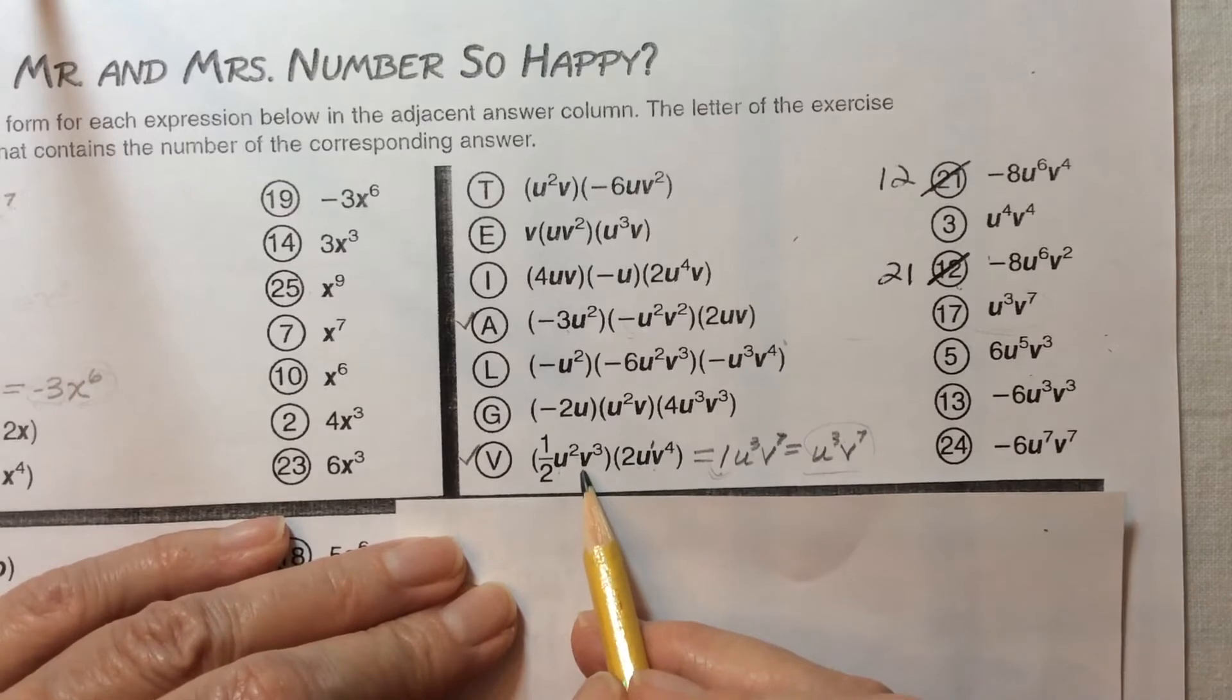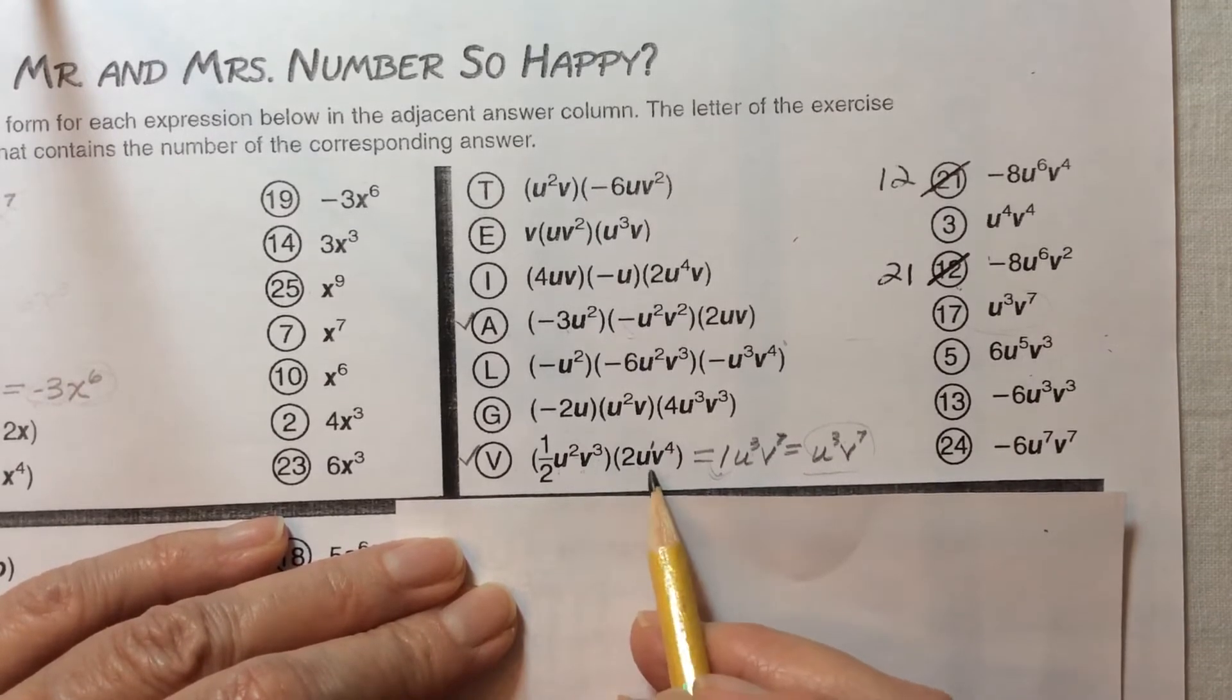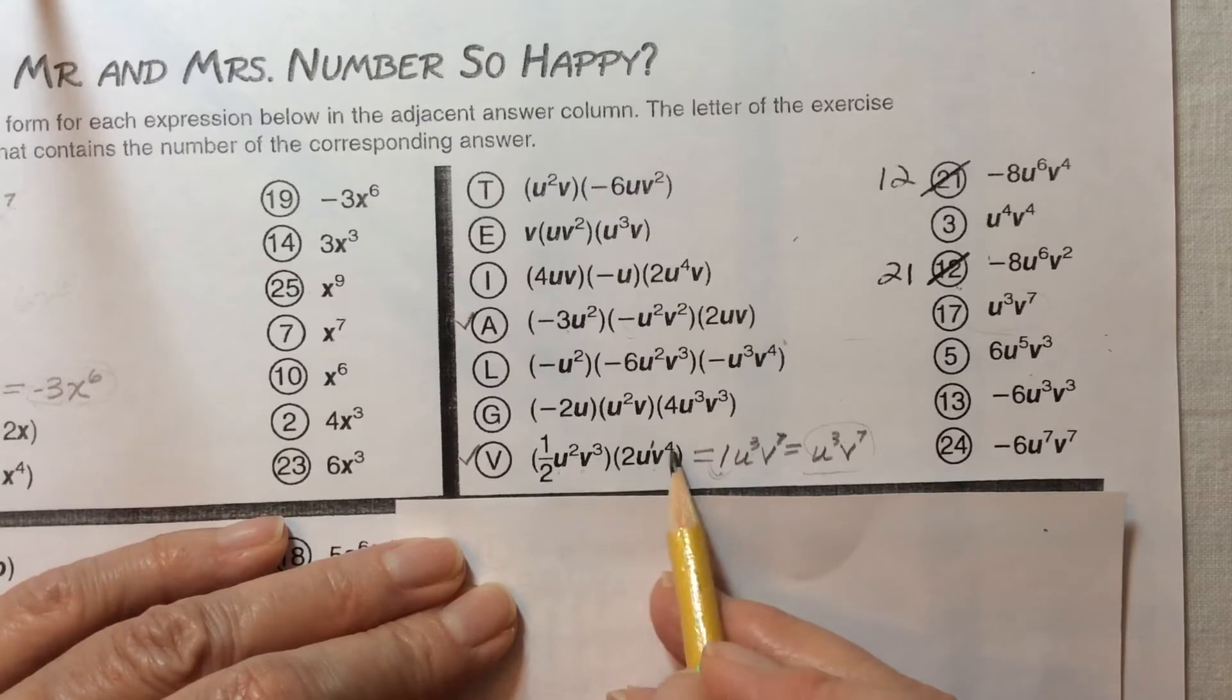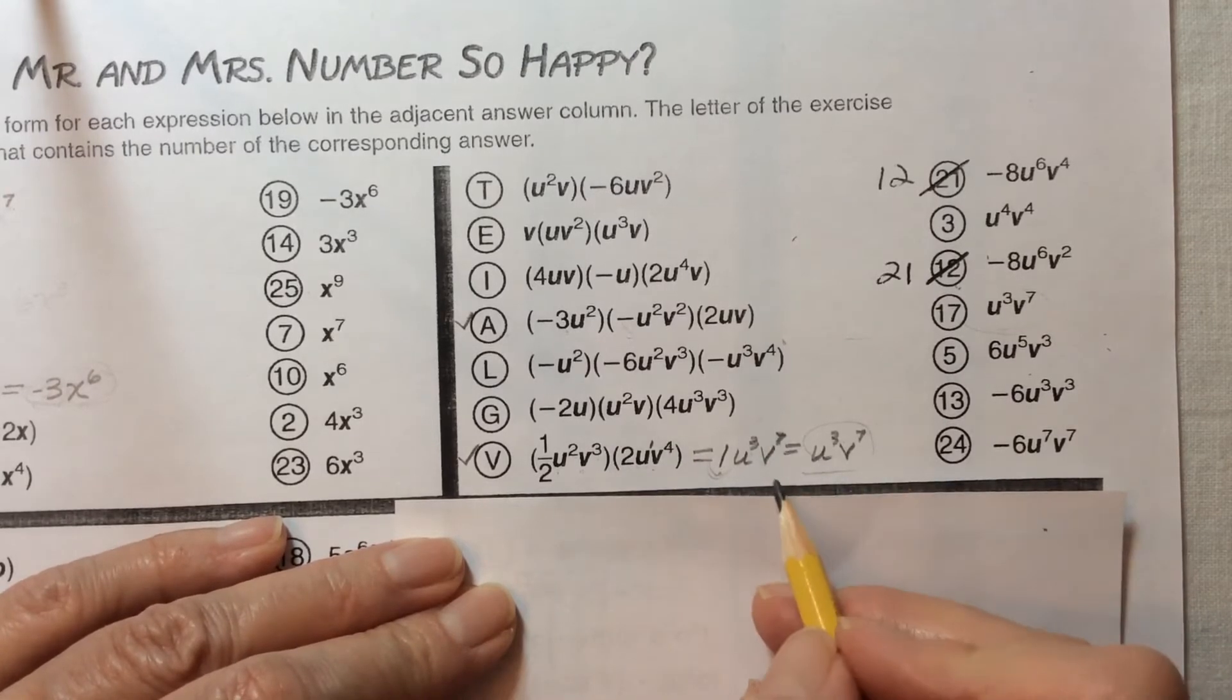And here if we take v³ and v⁴ we just add together the 3 and 4 and get v⁷.